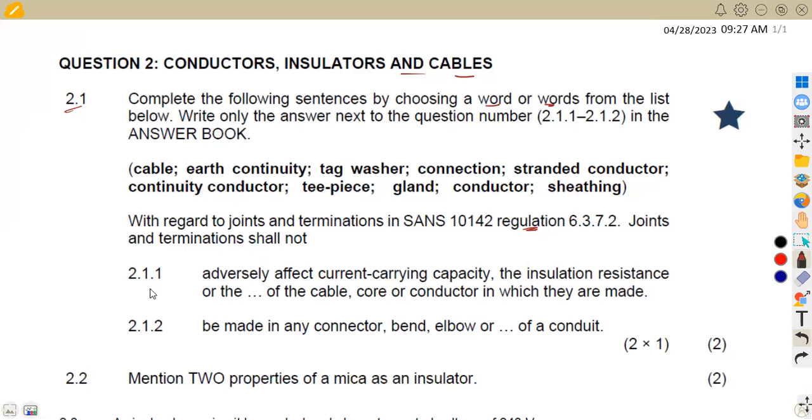So we are given the first part 2.1.1: adversely affect current carrying capacity, the insulation resistance, or the... so which part of the cable or conductor in which they are made. So we are adversely affecting, like what is it going to affect the current carrying capacity? So this is going to be affected with this part. We are given the insulation resistance or the earth continuity at the same time. So this is going to affect our 2.1.1, which is earth continuity.